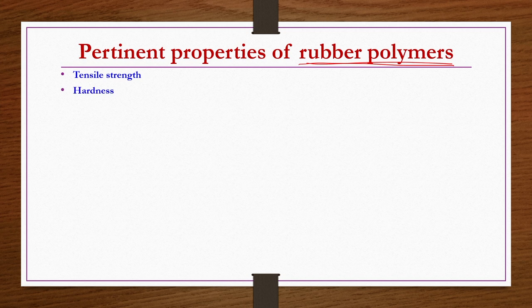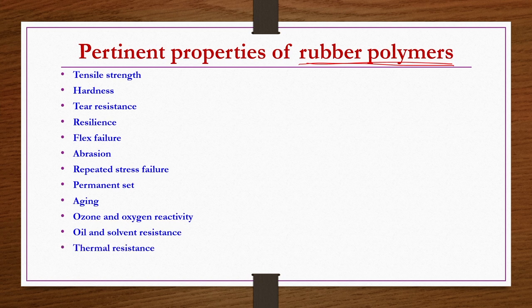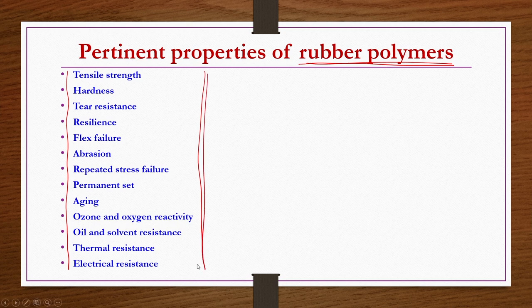However, we list the important properties to be considered when selecting polymers for your application: tensile strength, hardness, tear resistance, resilience, flex failure, abrasion, repeated stress failure, permanent set, aging, ozone and oxygen reactivity, oil and solvent resistance, thermal resistance, chemical resistance, and electrical resistance. Based on your application you have to select certain monomers, co-monomers, their mole ratios, and working conditions to get the desired properties.